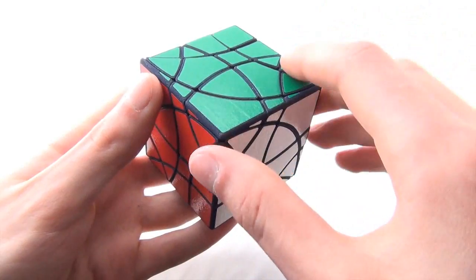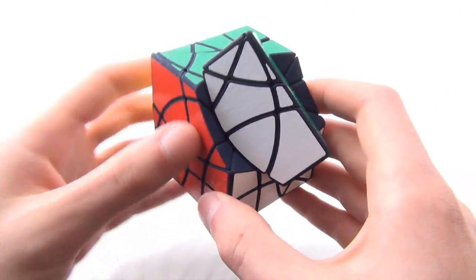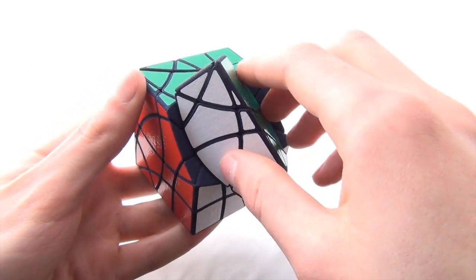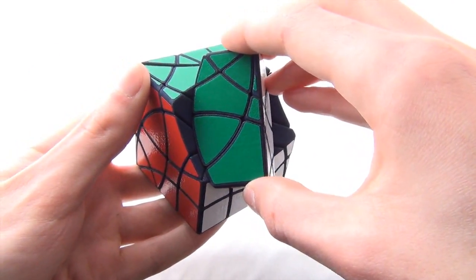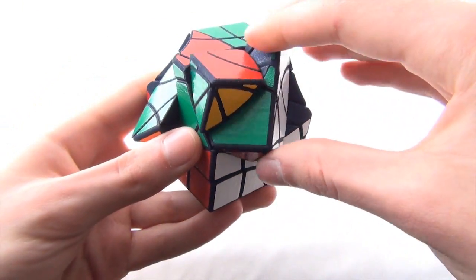And then, of course, we can also jumble between two adjacent edge layers. But interestingly, the jumbling move is not made like this, where you turn this up. Instead, you must turn it down in order for the jumbling to begin.